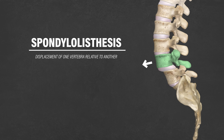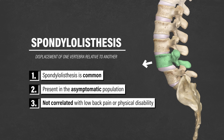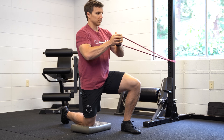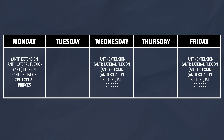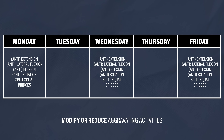In summary, spondylolisthesis is a condition characterized by displacement of one vertebra relative to another. Since it is present in the asymptomatic population and is poorly associated with low back pain and physical disability, non-operative management is recommended as the first line of treatment in the majority of cases. Surgery may be indicated if severe or progressive neurological deficits are present. Exercises should focus on improving function rather than changing spinal structure, including trunk and leg strengthening performed two to three times per week. Modifying or reducing aggravating activities such as walking, running, deadlifting, and playing sports is also an integral component of the overall rehab process.